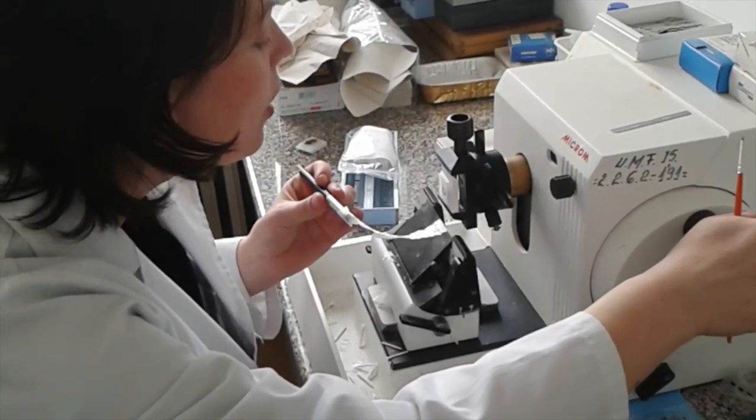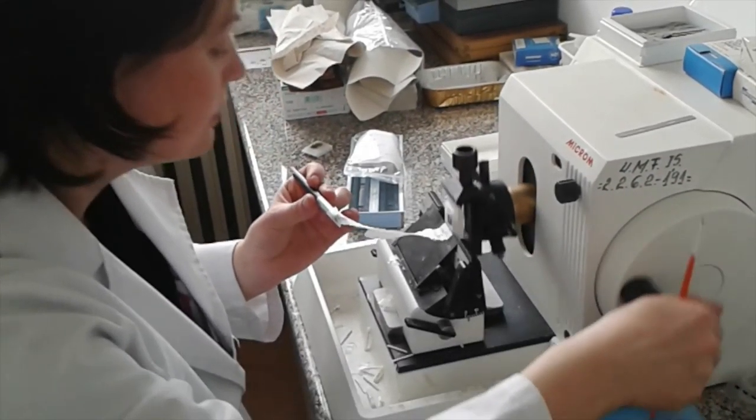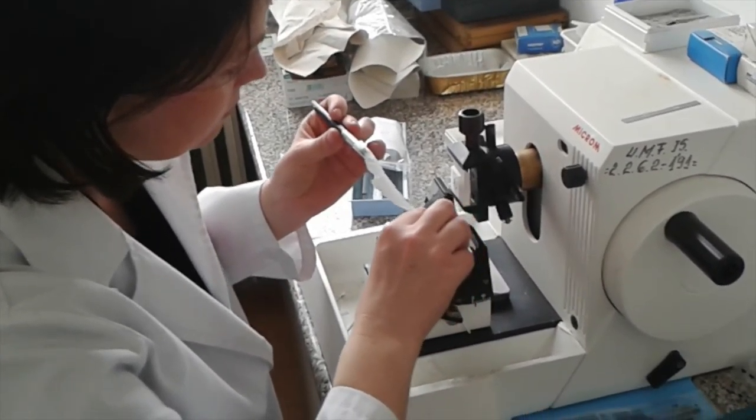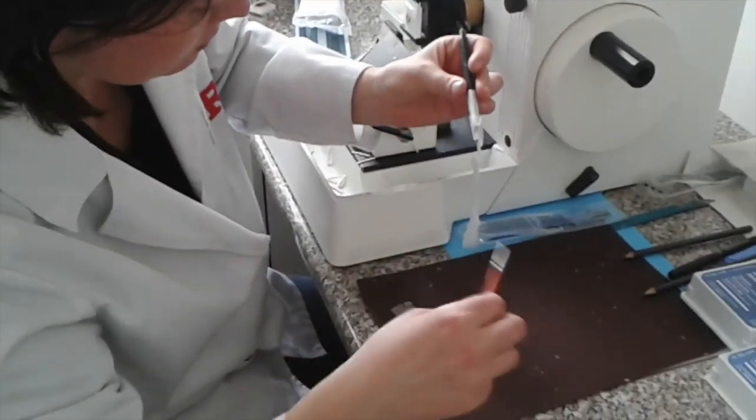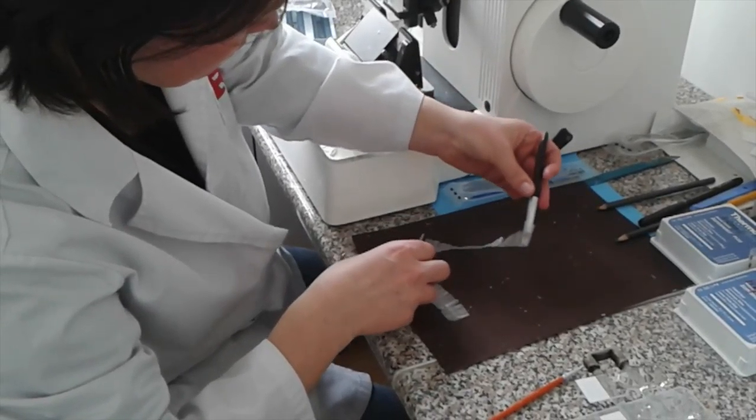After the fixation and the embedding steps, the next step is sectioning, that is we must cut thin slices of the samples in the microtome. The sections are usually about 3 or 4 microns thick.